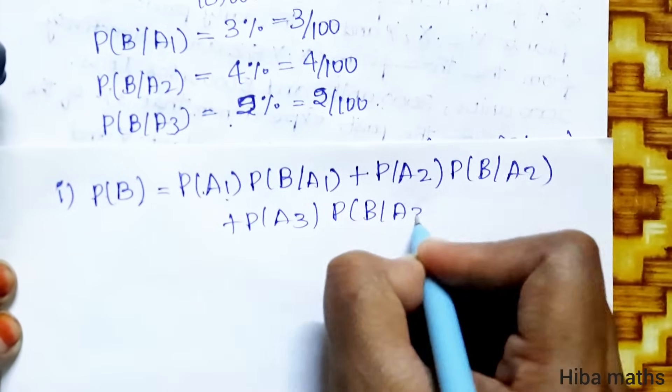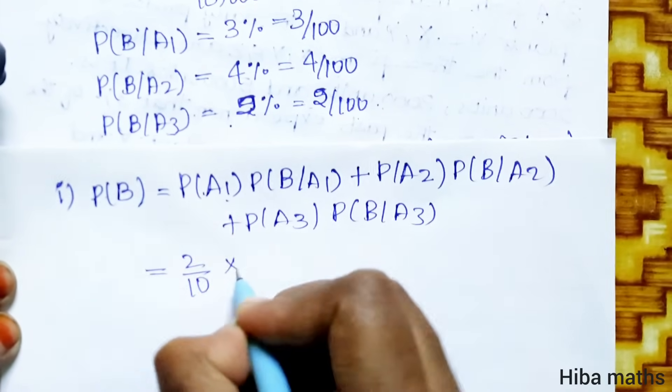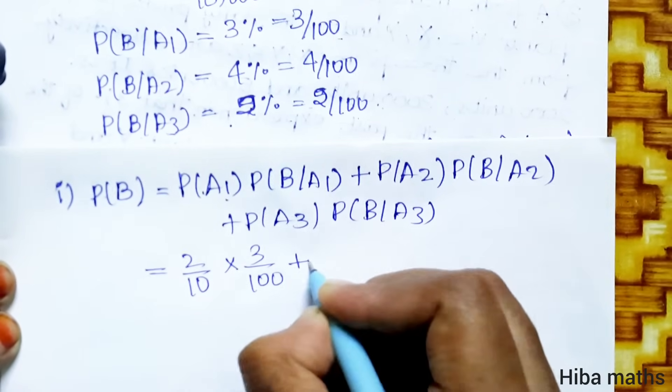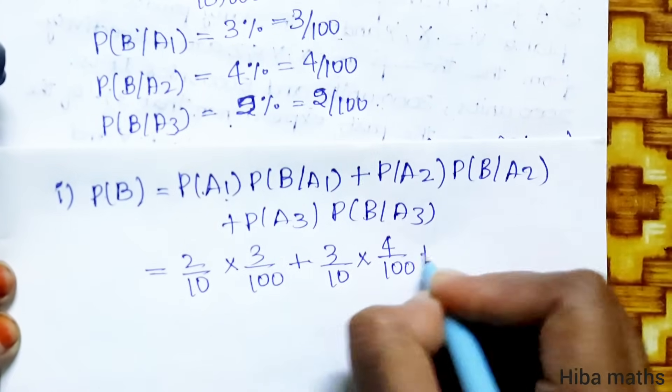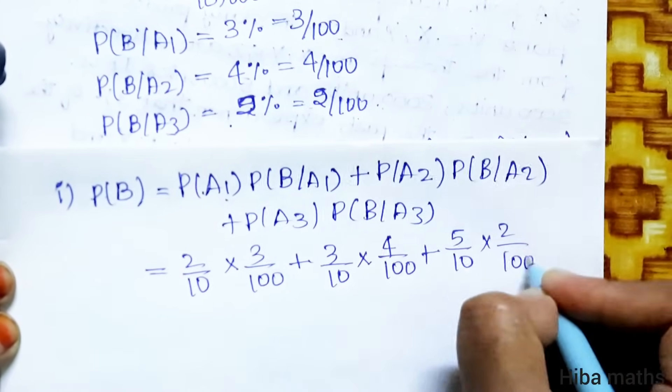Defective in plant Z. I will substitute. A1 is 2 by 10 and B by A1 is 3 by 100, plus A2 is 3 by 10 into 4 by 100, plus 5 by 10 into 2 by 100.